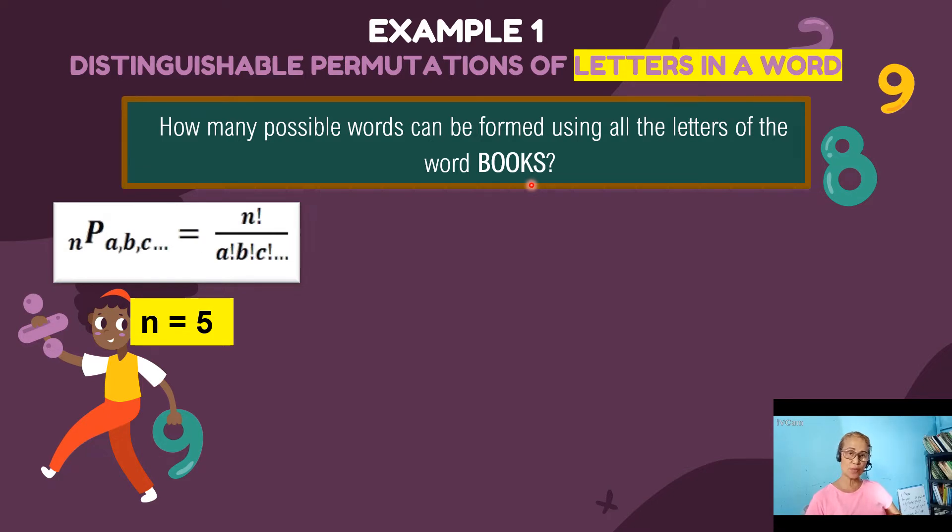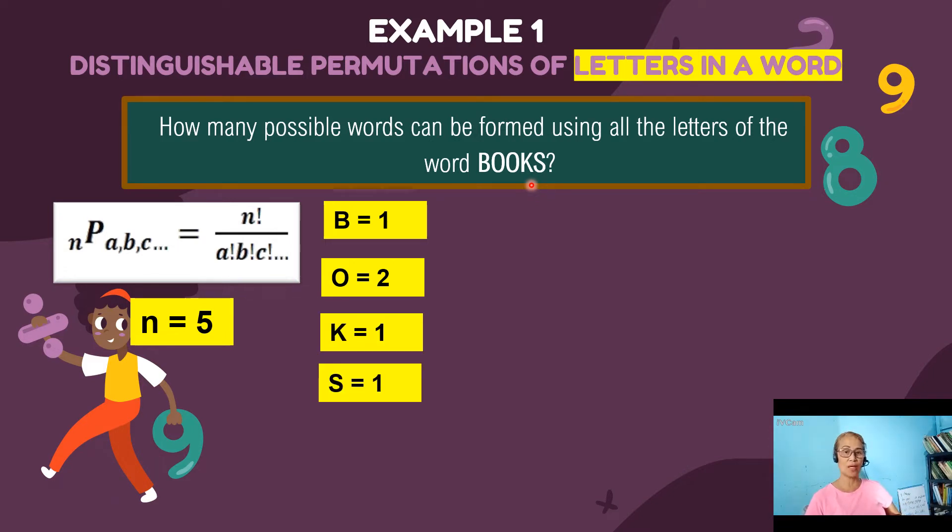Next is we are going to identify now our a, b, c or the members that are distinct. So B, the letter B has one letter. Next is O. There are two O's. Next is K. There's one K. And S. There's only one S.